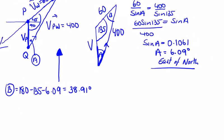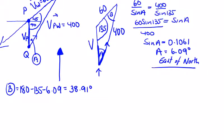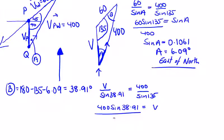We have V over the sine of the angle opposite, which we've just gotten, 38.91, is equal to 400 over sine 135. So 400 sine 38.91 is equal to V sine 135. Leave your V there...